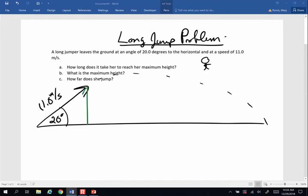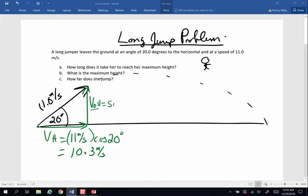So our long jumper is going to be leaving the ground at 11 meters per second, 20 degrees above the horizontal, following a parabolic path. The horizontal component, this is the adjacent side, is going to be 11 meters per second times the cosine of 20 degrees, which equals 10.3 meters per second. The original vertical velocity uses sine, so sine of 20 degrees times 11 meters per second gives 3.76 meters per second.